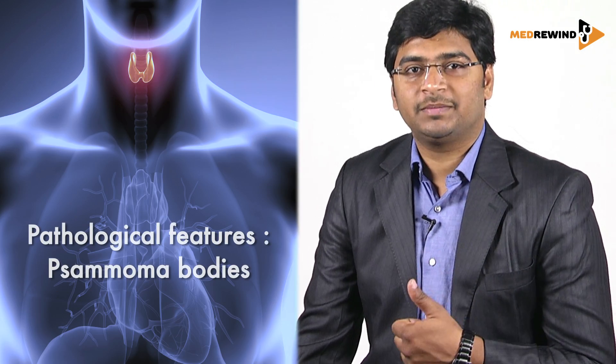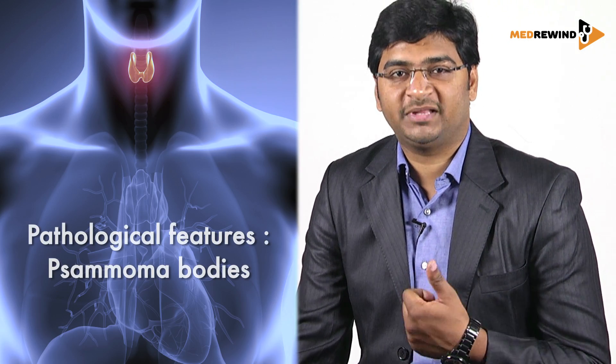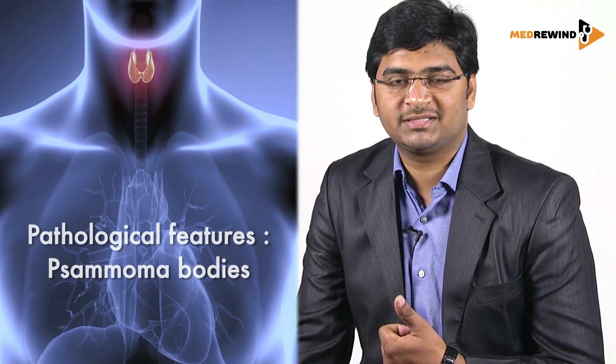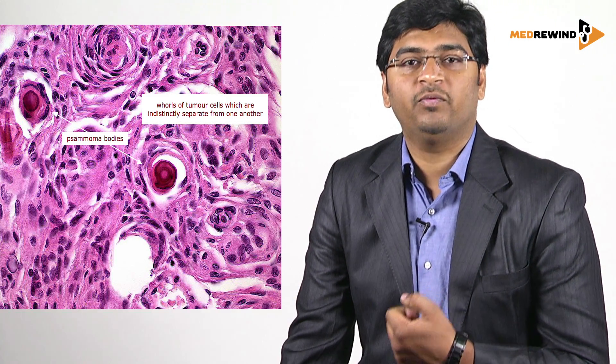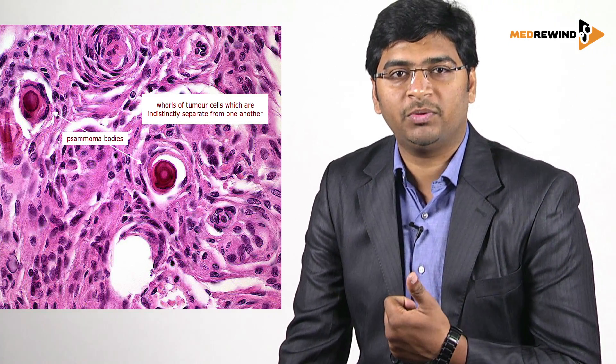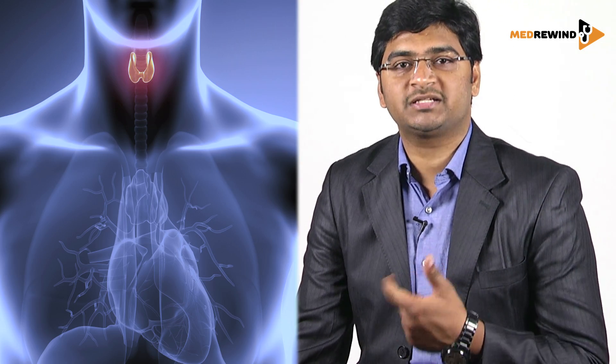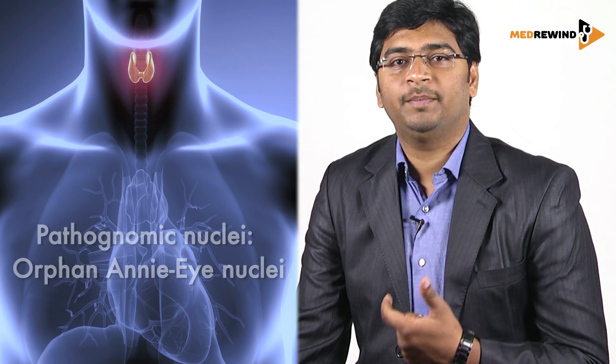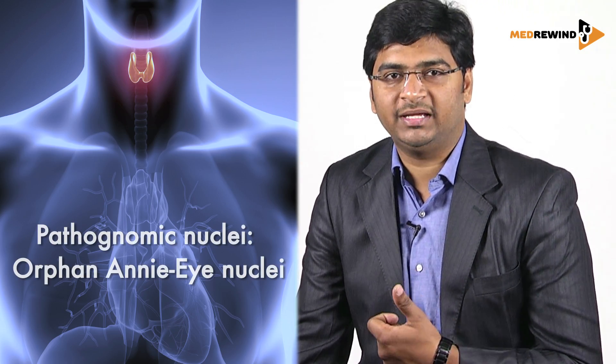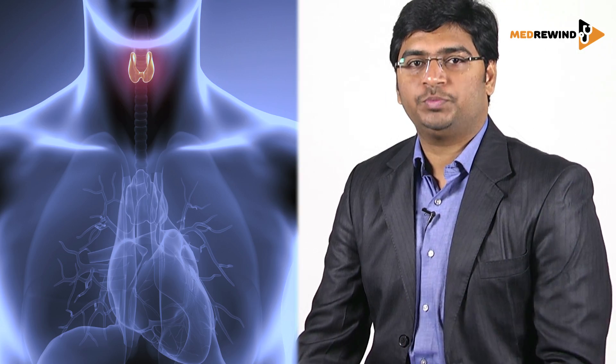The next P is 'Pathological features.' First, psammoma bodies are seen in papillary carcinoma of thyroid. The next pathological feature is pathognomonic nuclei — that is, orphan Annie nuclei are seen in papillary carcinoma of thyroid.